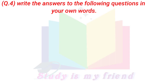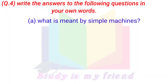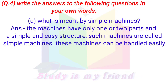Question 4. Write the answers to the following questions in your own words. A. What is meant by simple machines? Answer: Machines that have only one or two parts and a simple and easy structure are called simple machines. These machines can be handled easily.